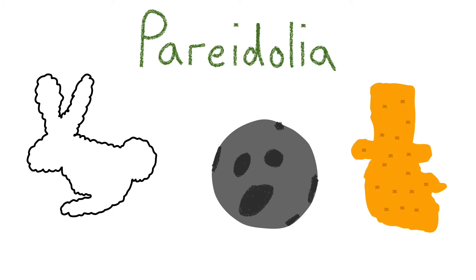Pareidolia is apophenia based on visual stimuli. For example, we see clouds shaped like various animals, we see a man on the moon, or we find a potato chip that looks exactly like Abraham Lincoln.